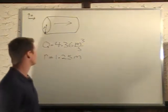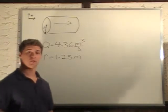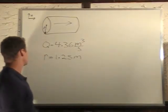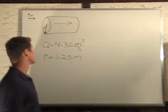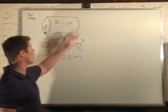In this problem we have a pipe full of oil, and we're told that it has a flow rate of 4.36 cubic meters per second and a radius of 1.25 meters. What we want to find is the velocity of the oil moving through this pipe.